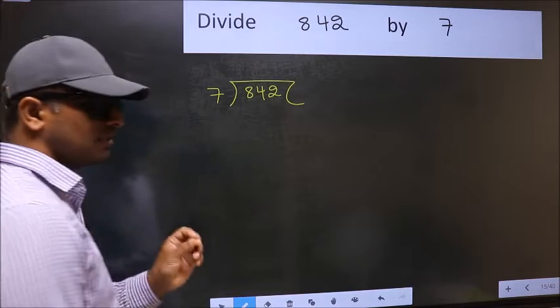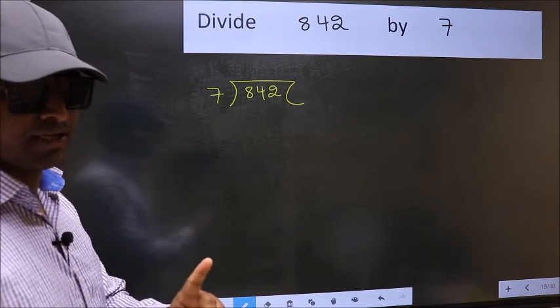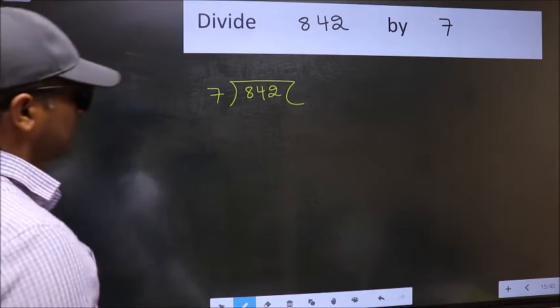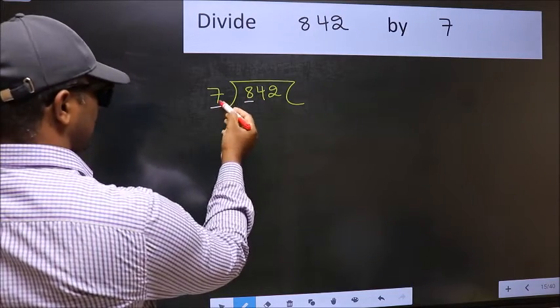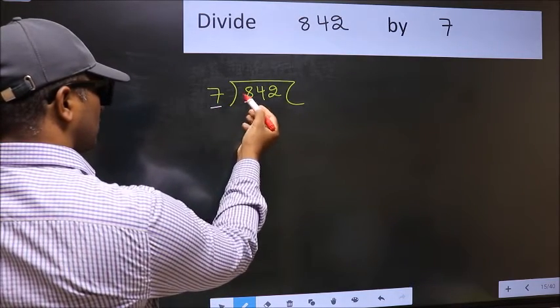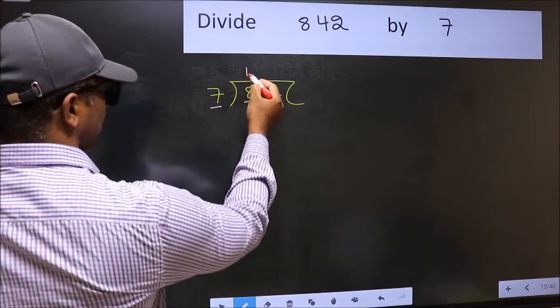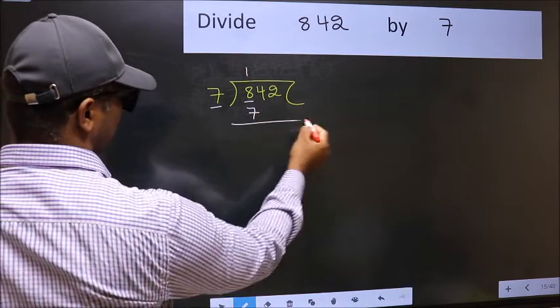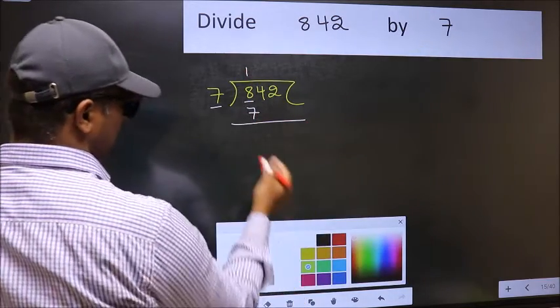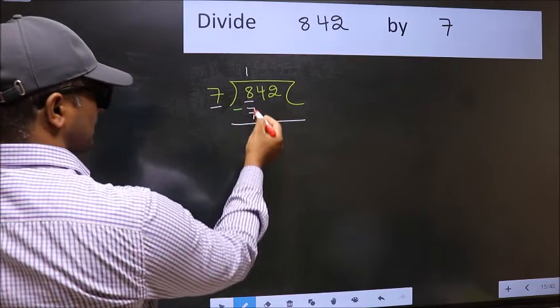This is your step 1. Next, here we have 8 and here 7. A number close to 8 in 7 table is 7 once 7. Now, you should subtract. 8 minus 7, 1.